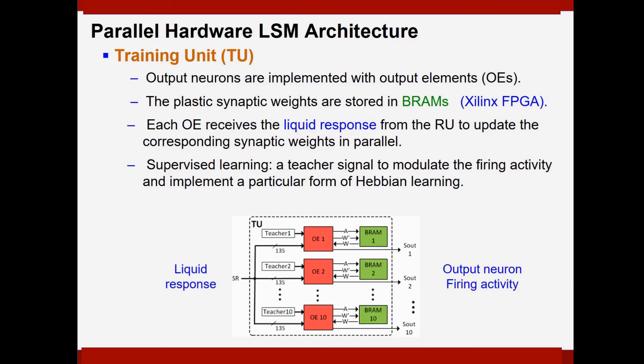The output layer of the liquid-state machine is implemented as the training unit. And the output neurons are implemented with the output element. The plastic synaptic weights are stored in the BRAMs, which are the on-chip memory resource of the Xilinx FPGA. And each output element receives the liquid response from the reservoir or the reservoir unit to update the corresponding synaptic weight in parallel. To realize the supervised learning, a teacher signal is used here to modulate the firing activity of each output element. And this implements a particular form of Hebbian learning.